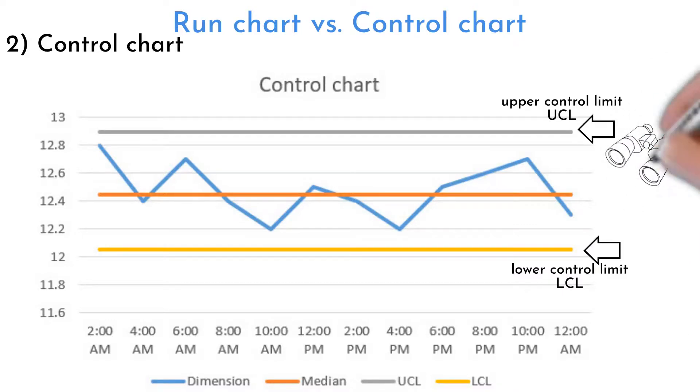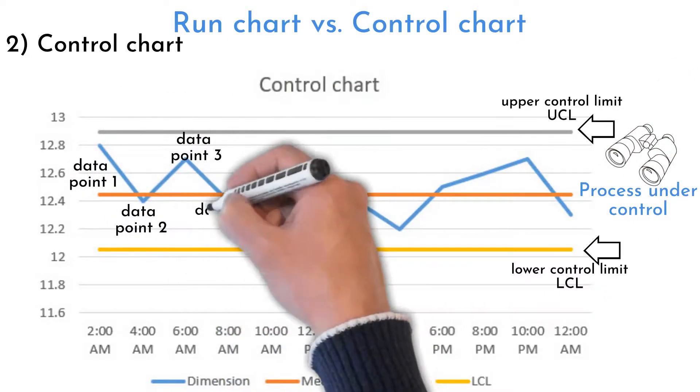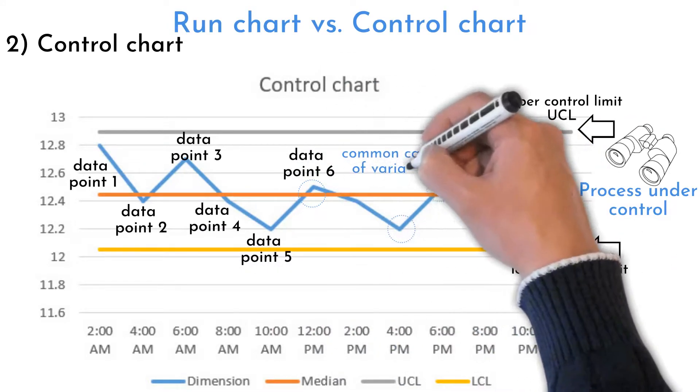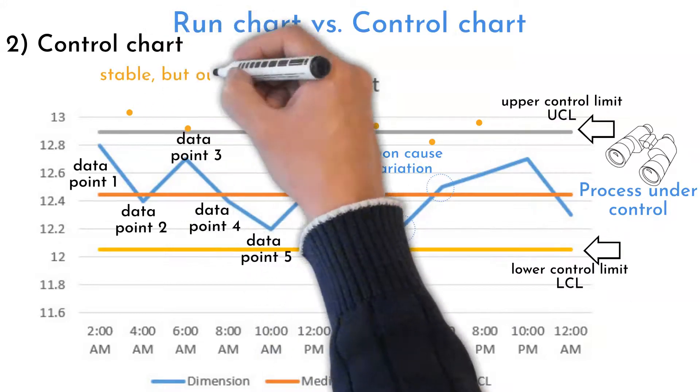Control chart is used to determine if a monitored process is under control. Measured values are visualized, so it helps to determine cause of variation. It can also determine stable process, but out of required limits.